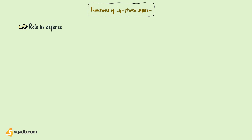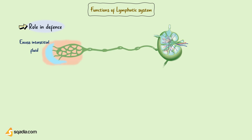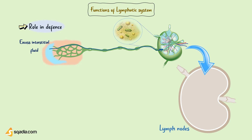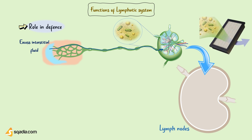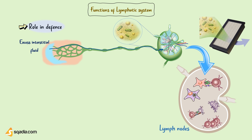Then comes the major role of the lymphatic system — the role in defence. As excess interstitial fluid drains into the lymphatic system, it carries foreign materials such as antigens, viruses, bacteria, and inhaled carbon particles. Lymphatic vessels carry all these things along with lymph to the lymph nodes. The lymph nodes act as filters — they phagocytose particulate matter and foreign antigens or bacteria. These lymph nodes have a large amount of WBCs that attack and kill these microbes and invading particles, thus providing defence against foreign antigens.